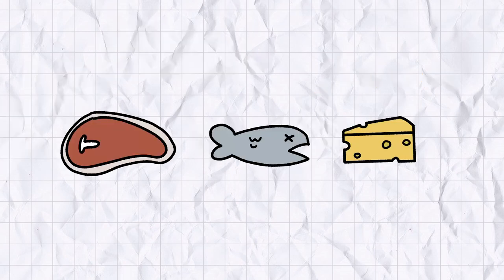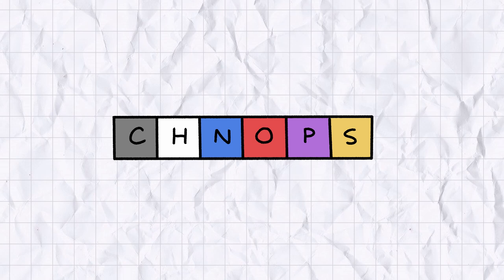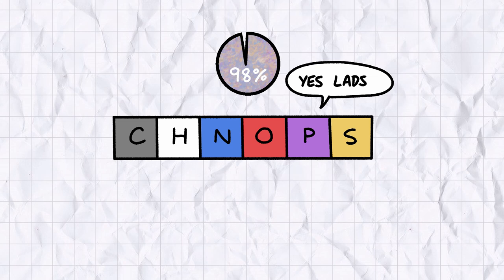And the reason he was able to extract it from urine was down to phosphorus' role in the human diet. Phosphorus is a common mineral in protein-rich foods, particularly red meat, fish, and dairy products. In fact, phosphorus is so common in living organisms, it's part of CHNOPS, the six elements that make up 98% of all living tissue on Earth, thought absolutely essential for life as we know it to exist.